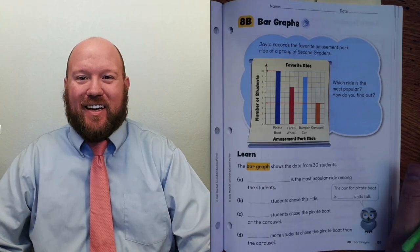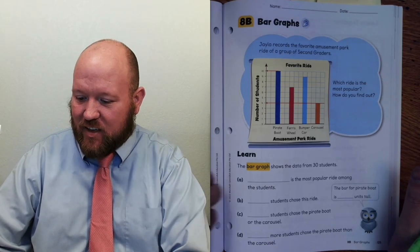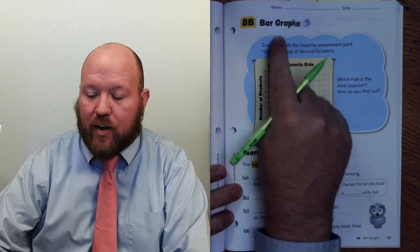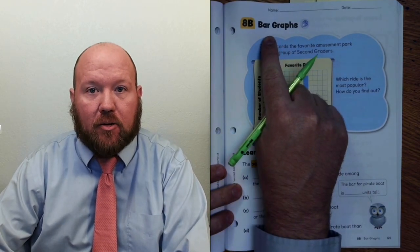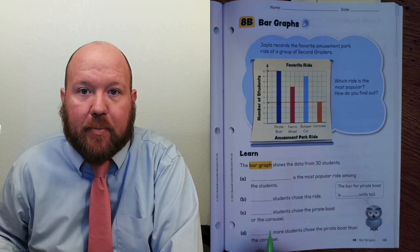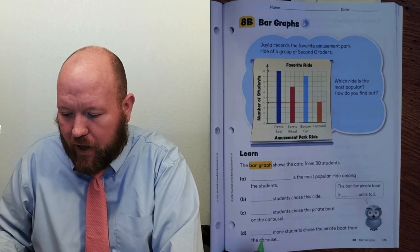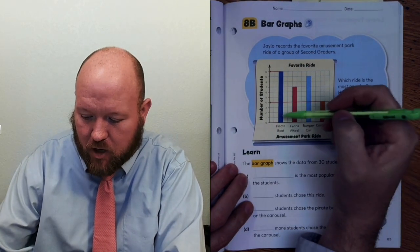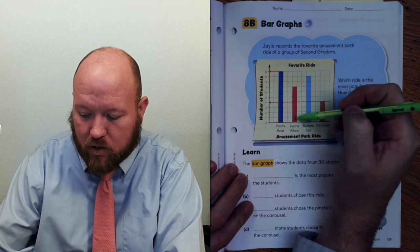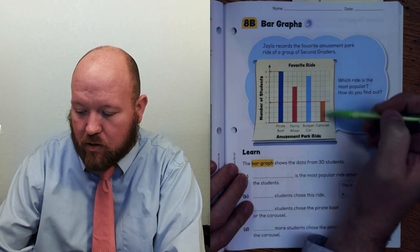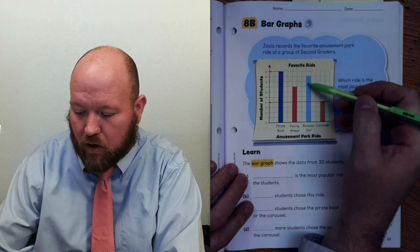Greetings and welcome to today's lesson. In today's lesson, we are starting on page 125, and we are looking at bar graphs. We've done tally charts and picture graphs, and now we're looking at bar graphs. This is called a bar graph because it's made of bars — each of these shapes is considered a bar.